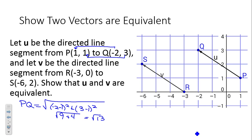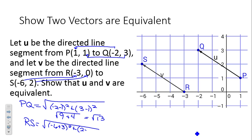We do the same with RS. The distance between R and S is the square root of (X₂ − X₁)² + (Y₂ − Y₁)². We get (−6 + 3)² = (−3)² = 9, and (2 − 0)² = 4. So again we get the square root of 13. They have the same magnitude.